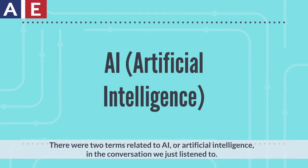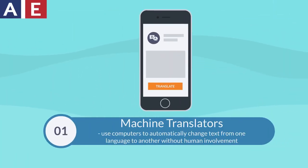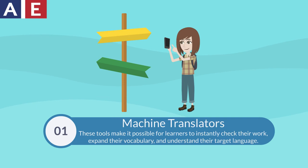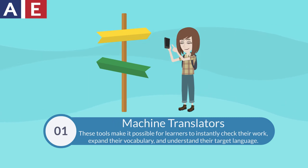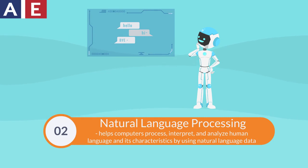There were two terms related to AI, or artificial intelligence, in the conversation we just listened to. Machine translators use computers to automatically change text from one language to another without human involvement. These tools make it possible for learners to instantly check their work, expand their vocabulary, and understand their target language. Natural language processing helps computers process, interpret, and analyze human language and its characteristics by using natural language data.